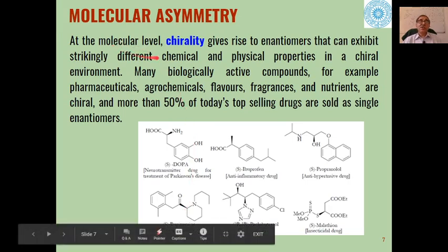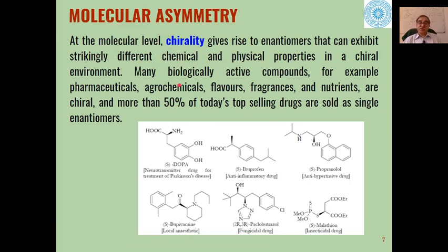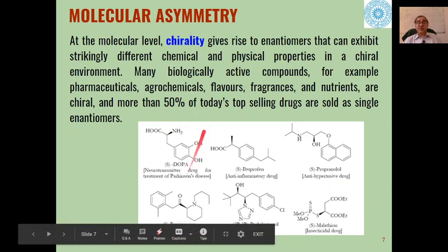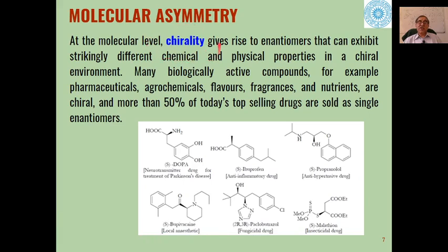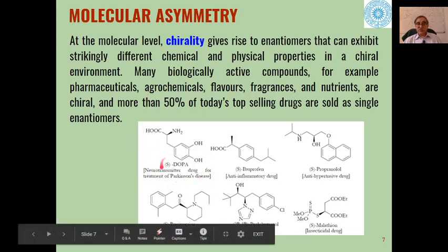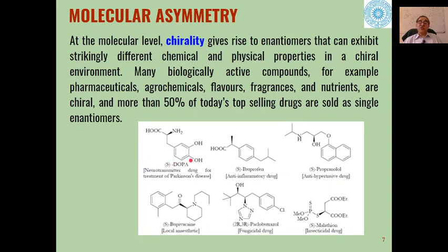This is a small introduction to molecular asymmetry. In the case of drugs, chirality gives rise to different enantiomers, and depending on the type of enantiomer, it will have a different kind of chemical and physical property in a chiral environment. For example, S-DOPA acts as a neurotransmitter drug for treatment of Parkinson's disease, but the R-enantiomer of DOPA is not effective as a drug.